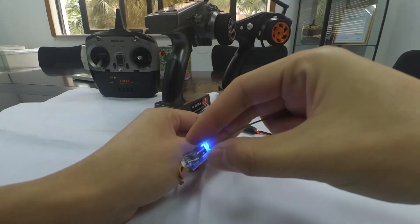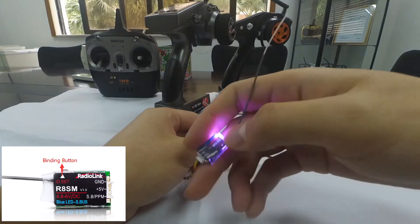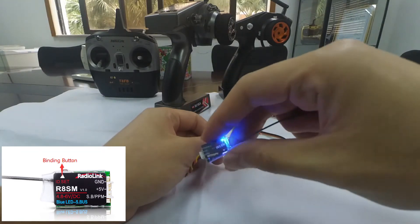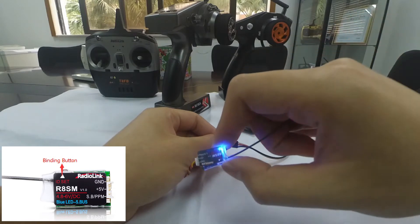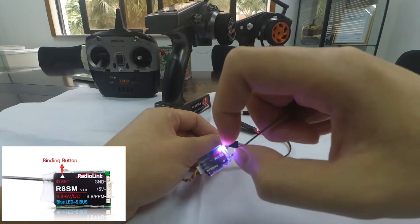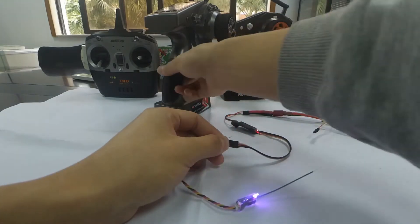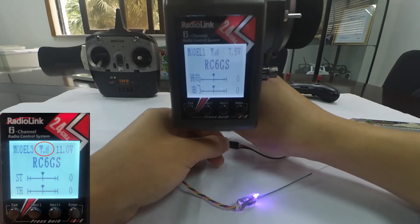Long press the binding button until the LED indicator flashes quickly meaning binding process is ongoing and release the button. When the LED stops flashing and is always on, we can see that a signal tower shown on top of the LCD screen of the transmitter. Binding is complete.